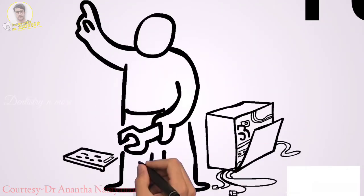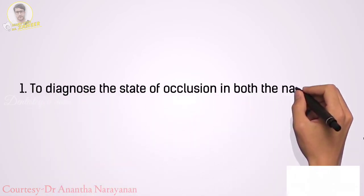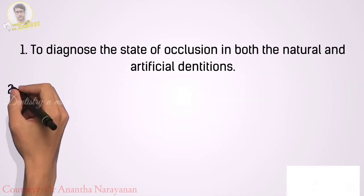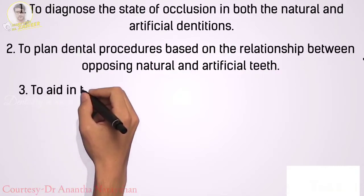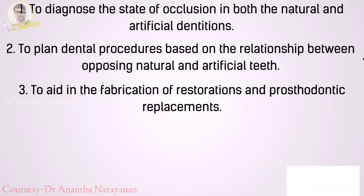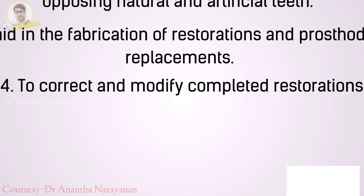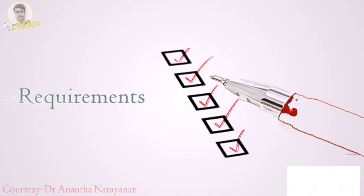The uses of an articulator are as follows. First, to diagnose the state of occlusion in both natural and artificial dentitions. Second, to plan dental procedures based on the relationship between opposing natural and artificial teeth. Third, to aid in the fabrication of restorations and prosthodontic replacements. Fourth, to correct and modify completed restorations. Fifth, to arrange artificial teeth.